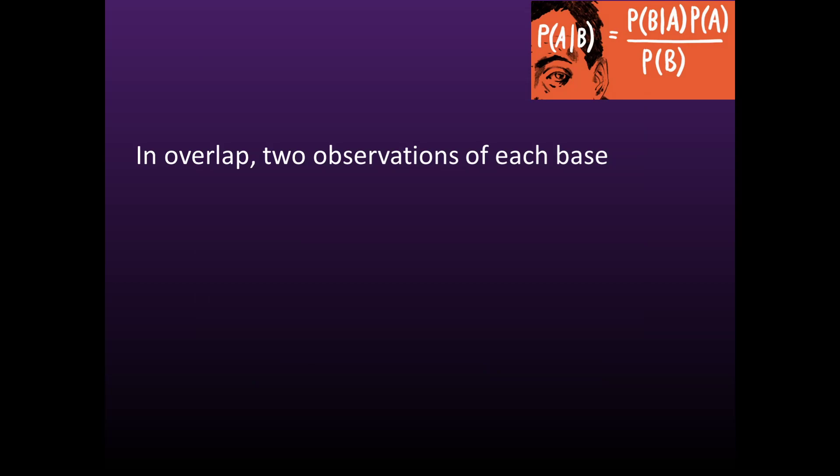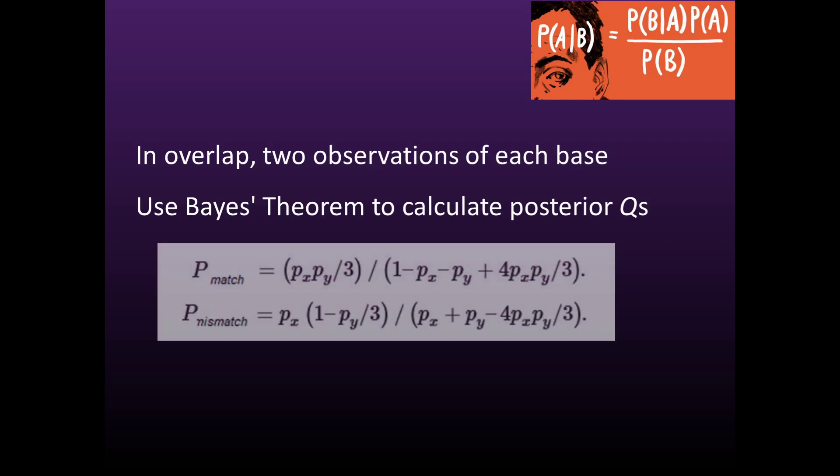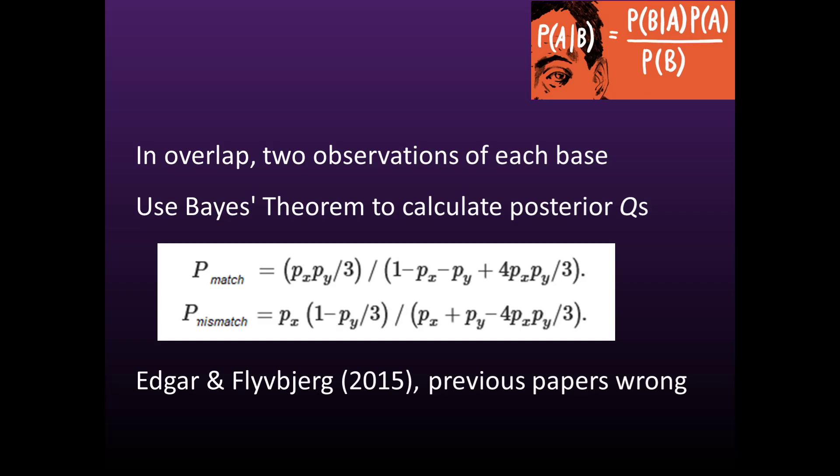In the overlapping segment, we have two independent observations of each base, and we can therefore use Bayes' theorem to calculate the posterior error probabilities, and hence the posterior Q-scores. The mathematics is reasonably straightforward, but several published papers got it wrong. The correct formulas are given in a 2015 paper that I wrote with my Danish colleague, Henrik Flubia.